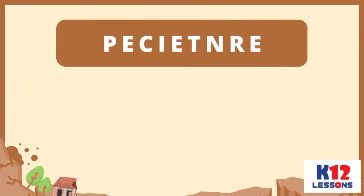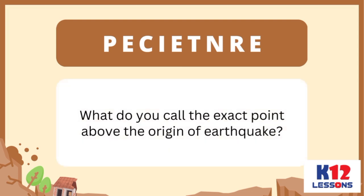Text Twist. Rearrange the scrambled letters to form a word by answering the question after it. What do you call the exact point above the origin of an earthquake?